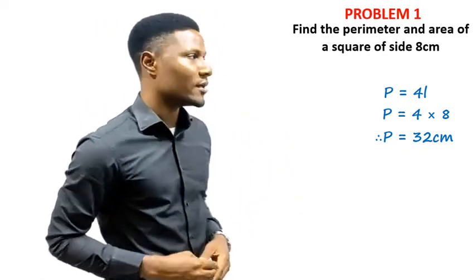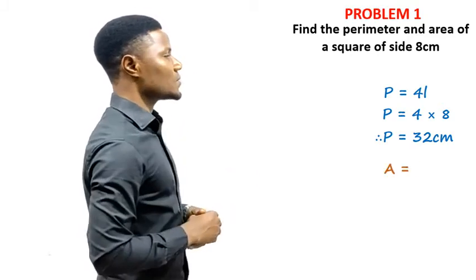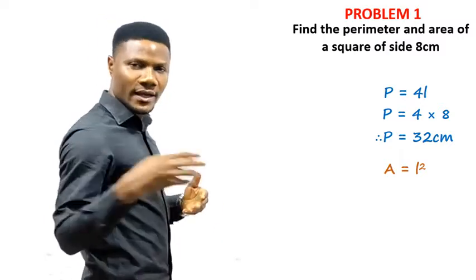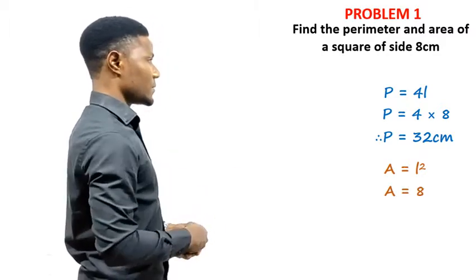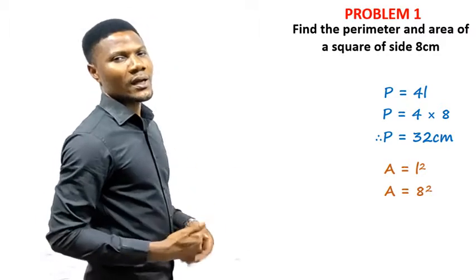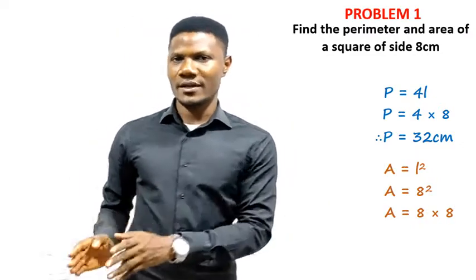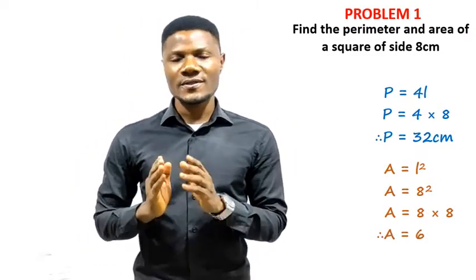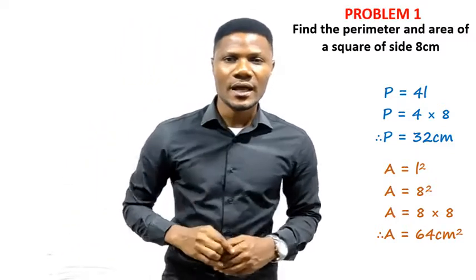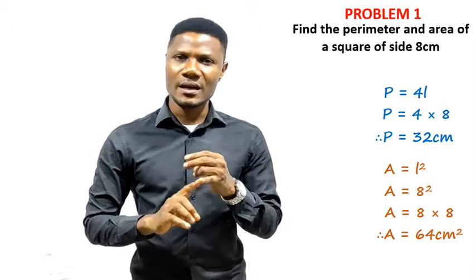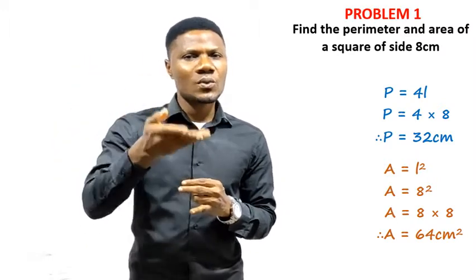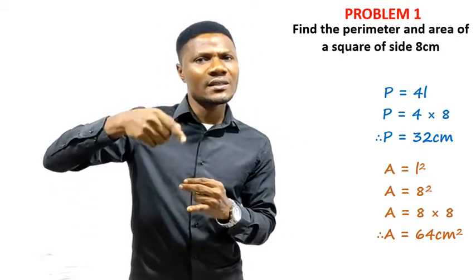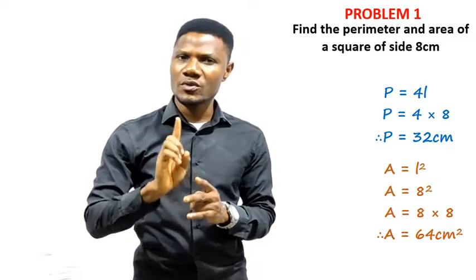Now let's find the area. A = L² = 8² = 8 × 8 = 64 cm². Remember, anytime you calculate area, your units must be in square — that's why in the definition we said it is the space occupied in square units.